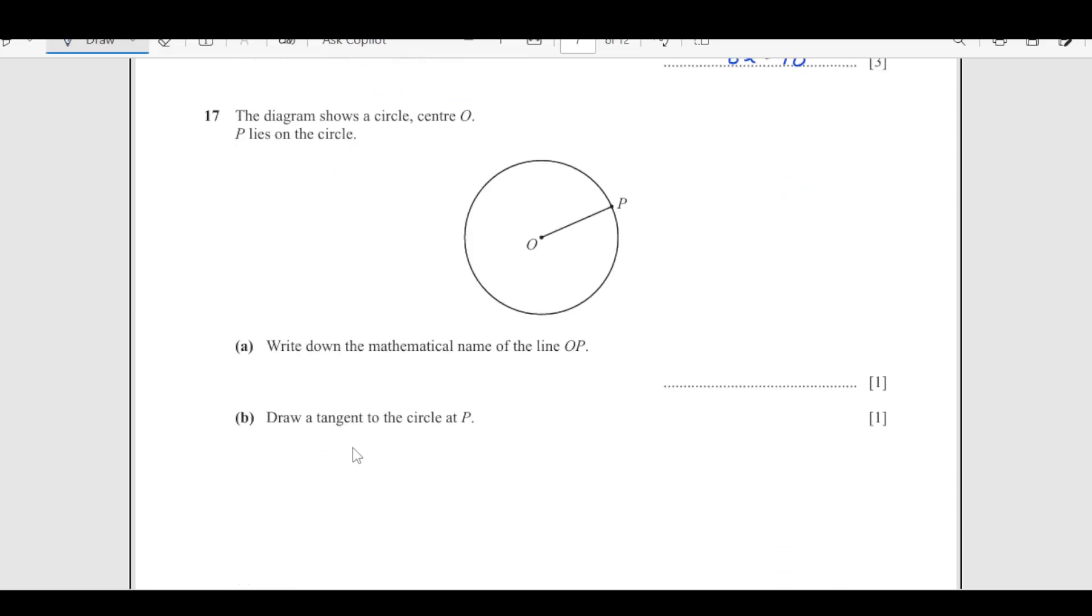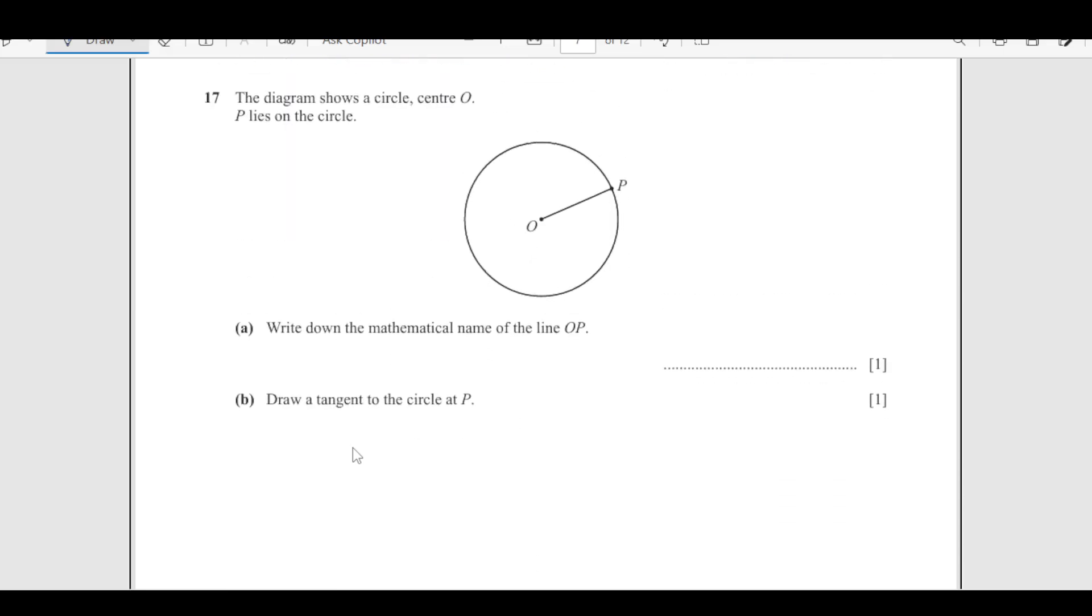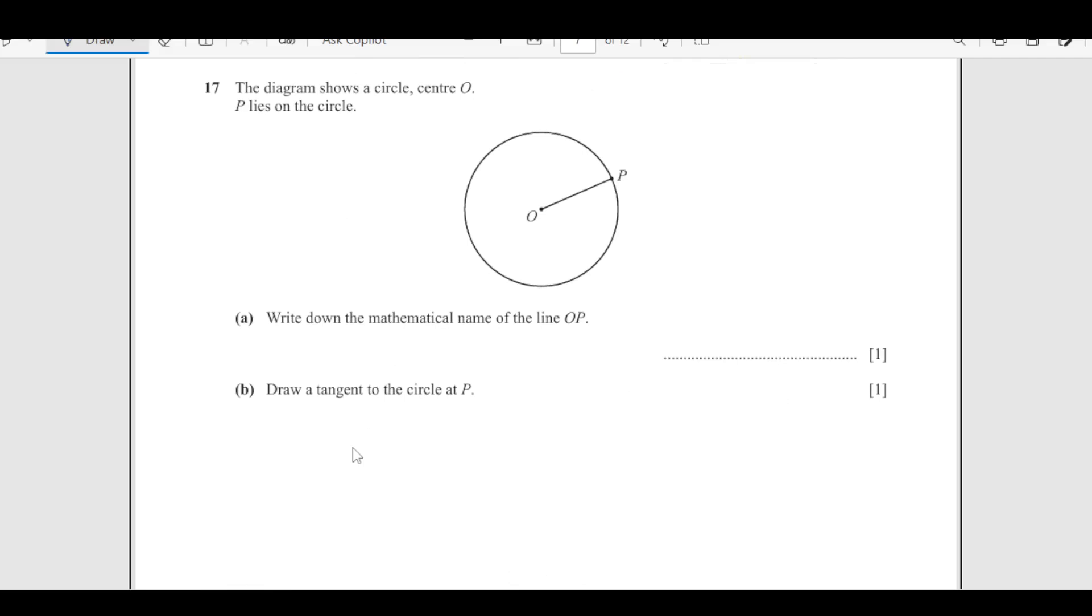Now number 17, the diagram shows a circle. P lies on the circle, write down the mathematical name of OP. This is radius, very clear. Radius is a line that joins center and another point on the circumference.